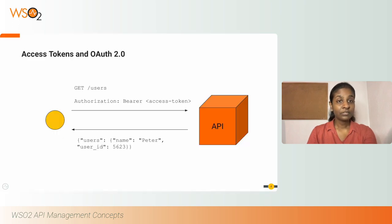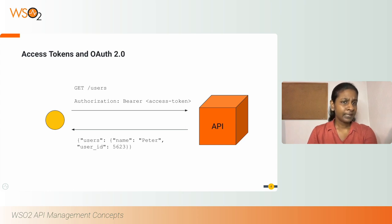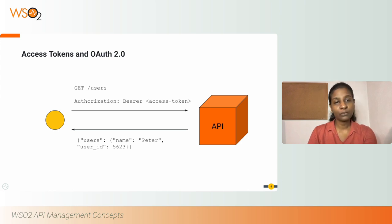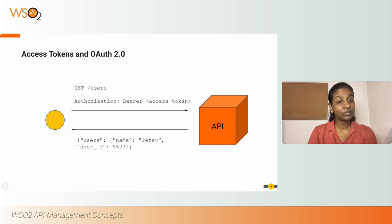I talked about generating an access token in the previous slide. So what are access tokens? Access tokens are used to authenticate and authorize a user or an application that is trying to access the resources of an API. APIs published in the API gateway are by default secured using OAuth2, which is an industry standard authorization framework used for access delegation in the REST API world. The access tokens issued by WSO2 API Manager are JWT tokens. JWT is an open industry standard used to share information between two entities and is used for authentication and authorization purposes.